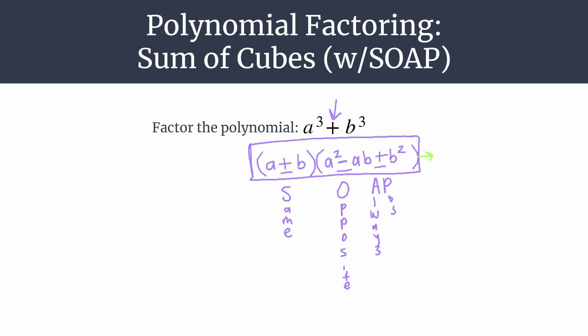So just simple polynomial multiplication. We'll start with this term a. So a times a², a³. A times -ab is minus a²b. A times b², of course, is plus ab².